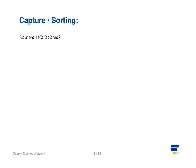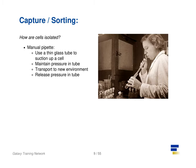Cell isolation can be performed in different ways. One method is manual pipetting, where wet lab scientists suction up individual cells using a long thin tube. They can do this hundreds of times to isolate hundreds of cells, but it is error prone, and often multiple cells are isolated together.